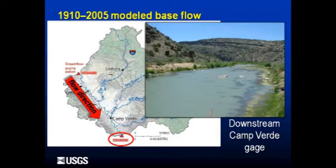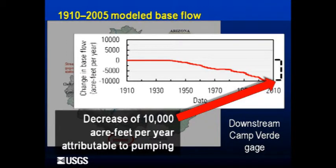We move then to the downstream gauge — the Camp Verde gauge. It's downstream of Camp Verde, past Beasley Flat, near the Verde Falls, the pour point of the Verde Valley. We ask the same question, do the same graphs, same math, and we produce this line. It is similar in character but different in shape and magnitude from the upstream one. Here we see moving from left to right: it begins at zero, but by 2005 there has been a decrease at the downstream end of the Verde Valley of about 10,000 acre-feet per year, attributable to human stresses — groundwater pumping namely.